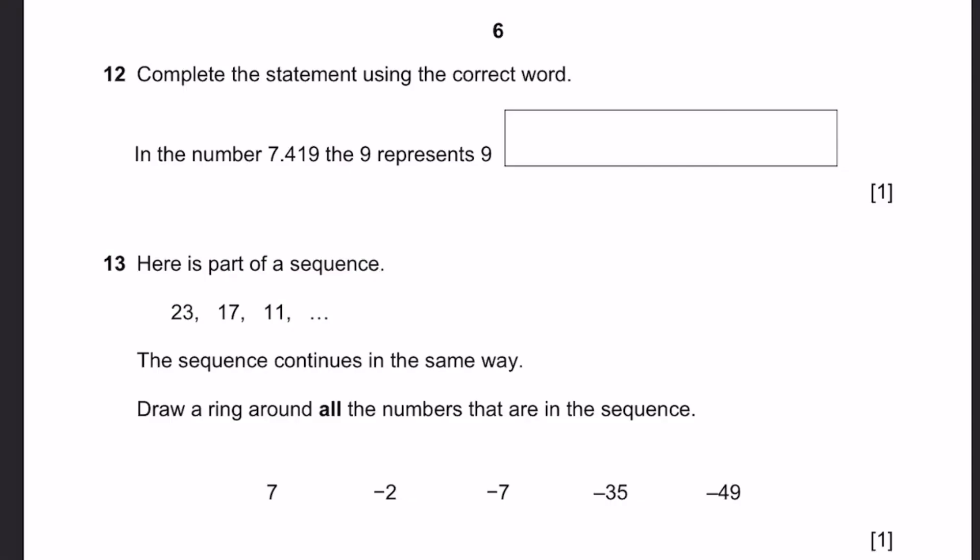Question 12. Complete the statement using the correct word. In the number 7.419, 9 represents 9 dash. There is actually 9 thousandths, because it is in the thousandths place.